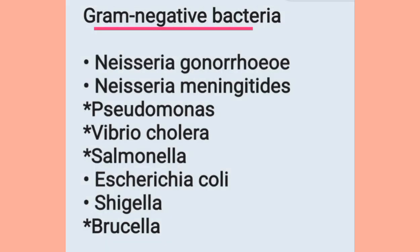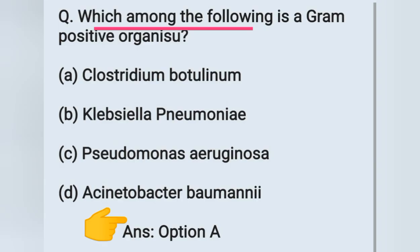Gram negative bacteria include Neisseria gonorrhoeae, Neisseria meningitidis, Pseudomonas, Vibrio cholerae, Salmonella, E. coli, Shigella, and Brucella. So the answer is option A: Clostridium botulinum, which is a gram positive organism.